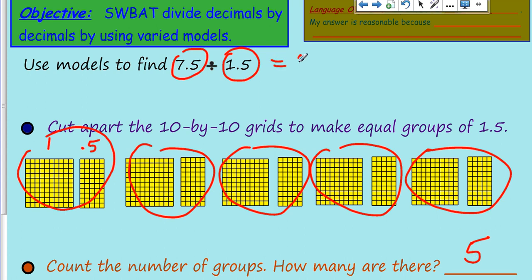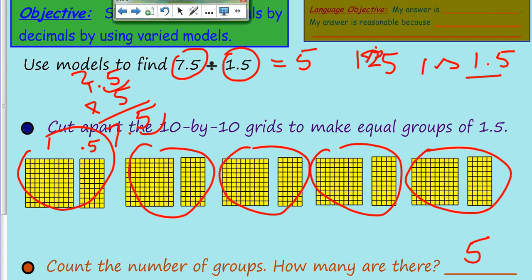When I count the number of groups, I can say that seven and a half divided by one and a half is equal to five. Of course we learned yesterday I could always check my work. I could multiply that times five. That's 25, look at that with one decimal point from the factor into the product, I get seven and a half. So I checked my work. Now I could use my language objective and say my answer is five for this particular problem. My answer is reasonable because I looked at seven and a half and knew that if I was breaking it up in groups of one and a half, five is reasonable, and I also checked my work.